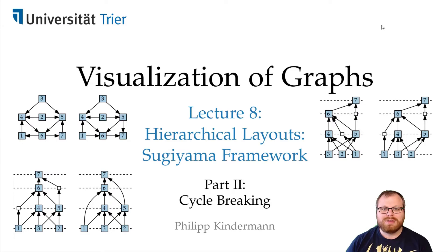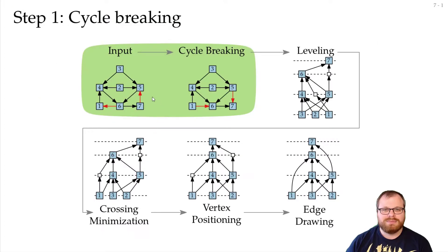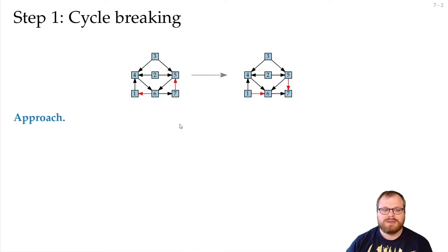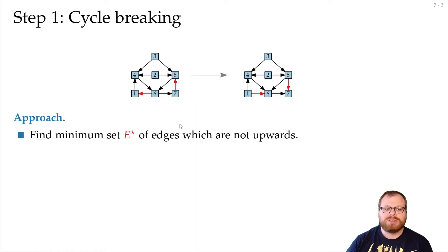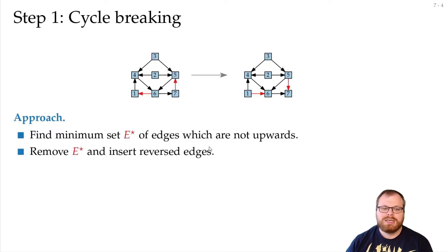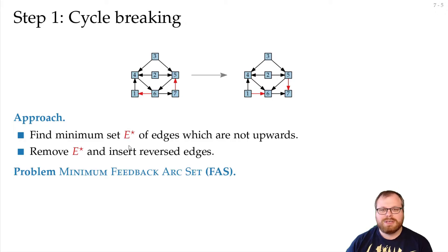Step 1 of the Sugiyama algorithm deals with the breaking of cycles. We take as input the directed graph, and we try to find some edges that if we revert them, then we get an acyclic graph. The approach is to find a minimum set E-star of edges which are not upwards, then remove them and insert the reversed edges. This formulates the problem minimum feedback arc set, or FAS.